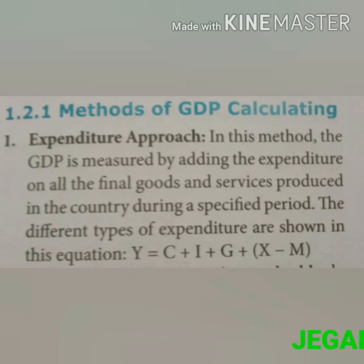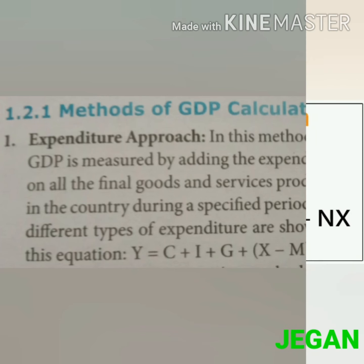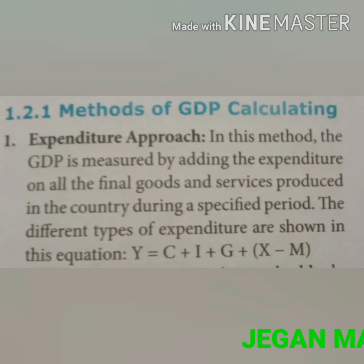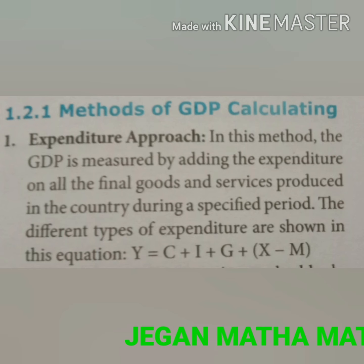There are three methods of calculating GDP. The first is the expenditure approach. In this method, the GDP is measured by adding the expenditure on all final goods and services produced in the country during a specified period. The different types of expenditure are shown in the equation: Y equals C plus I plus G plus X minus M.